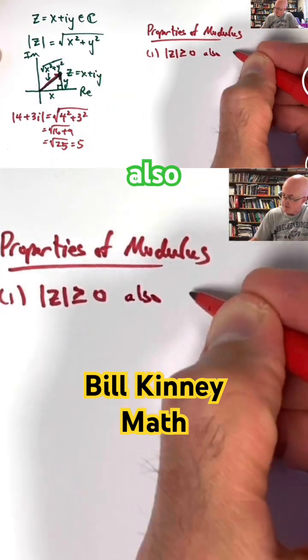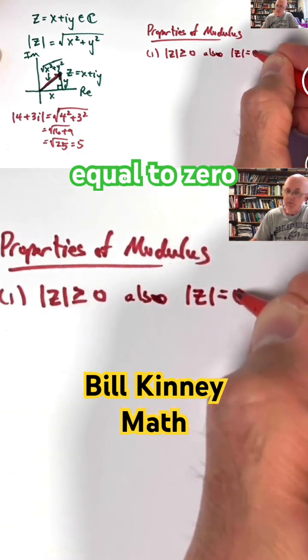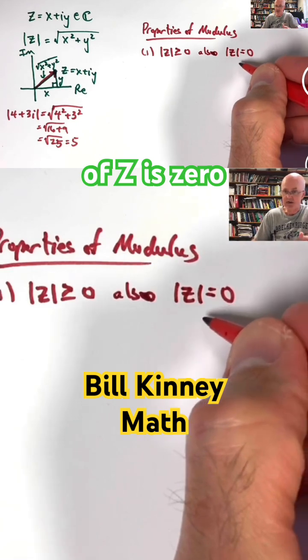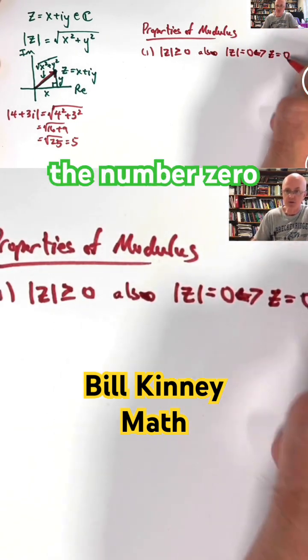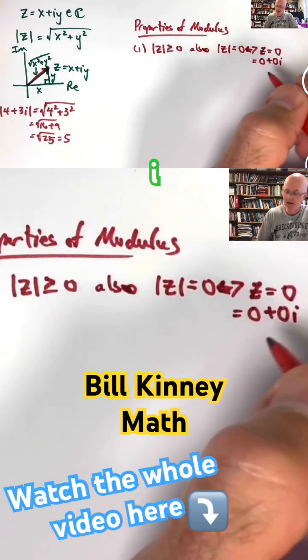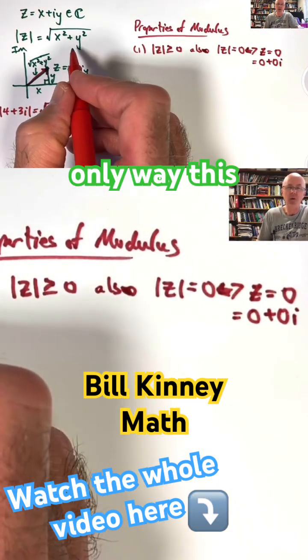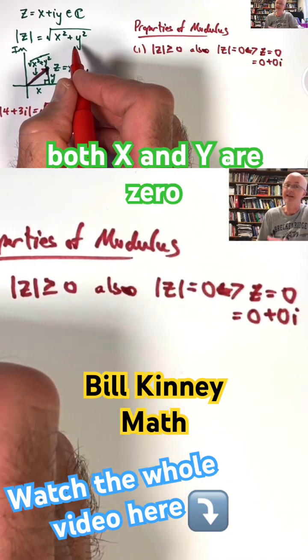Moreover, the only way the modulus of z is 0 is if z itself is the number 0, which I can think of as a complex number 0 plus 0i. Think about that. The only way this quantity is ever going to be 0 is if both x and y are 0. No other time.